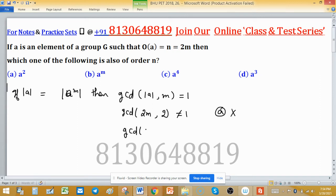GCD of 2M with M is not equal to 1 because M is common factor. So option B is discarded here.